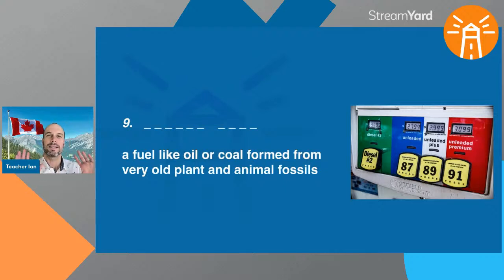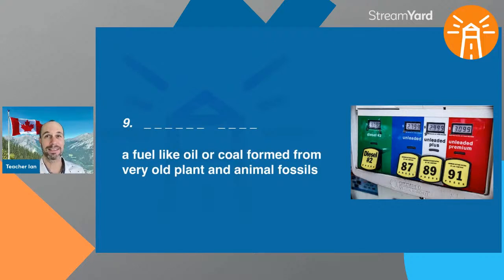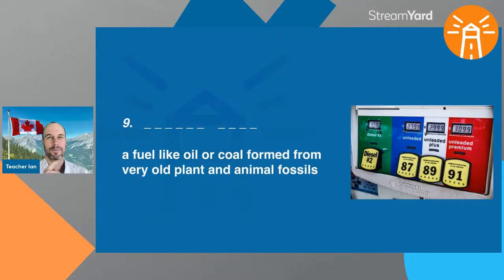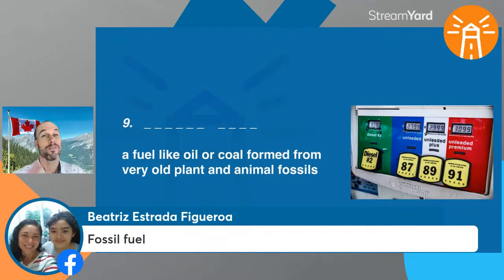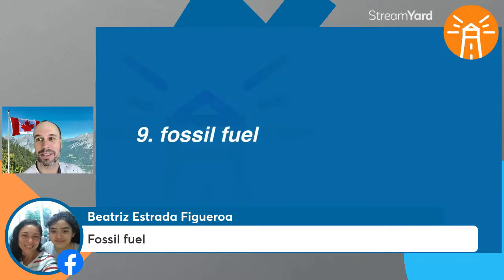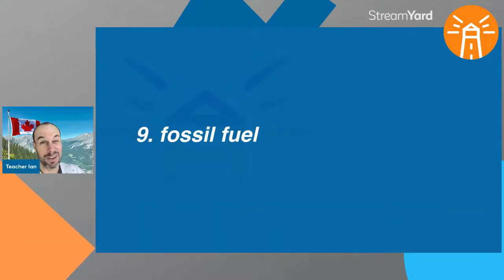Number nine: a fuel like oil or coal formed from very old plant and animal fossils. Fuels like oil, coal, or gas that are very bad for the environment and come from old plant and animal fossils. This is like the opposite of renewable — renewable means it keeps coming back; this, once we use it, it's gone forever. Beatrice got it — fossil fuel. Canada produces a lot of fossil fuels, especially oil and gas.